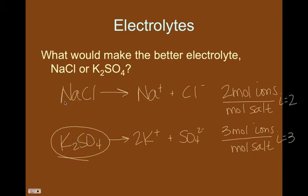If you had a concentration of NaCl that was twice that of K2SO4, well, then the NaCl would be the better conductor because then you would have two times twice the molarity, which would be four. So it would be a better conductor in that way. But if we had equal concentrations of these two salts, then the K2SO4 is going to be the better electrolyte.